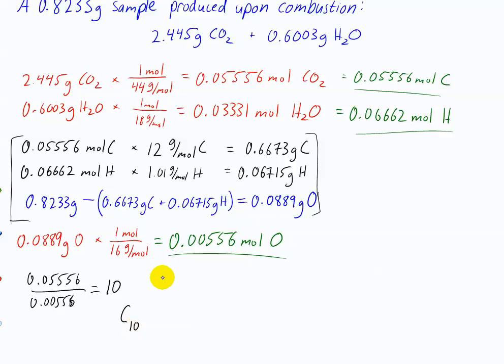Do the same thing with hydrogen. And you get H12. And then oxygen divided by itself is going to be 1. So our empirical formula is C10 H12 O, or O1.